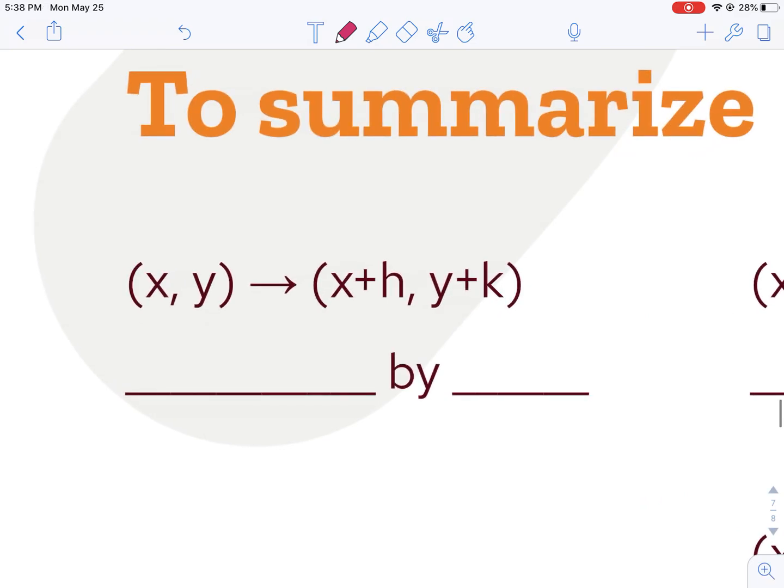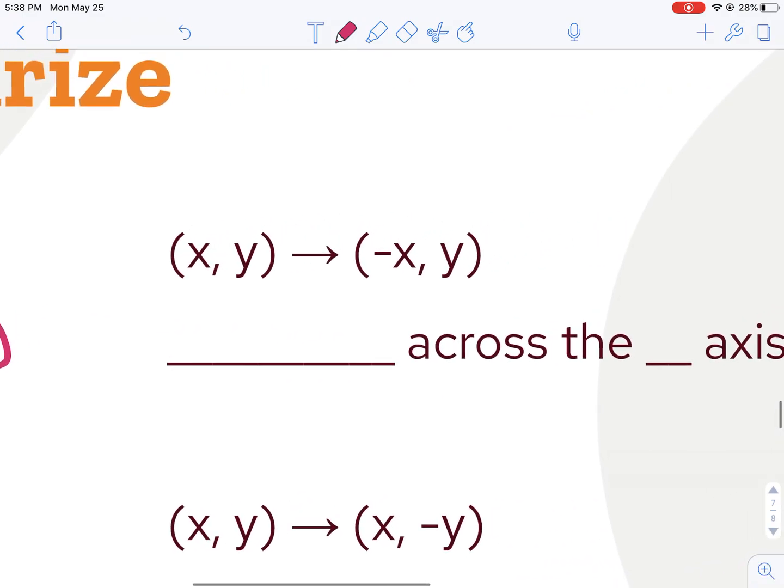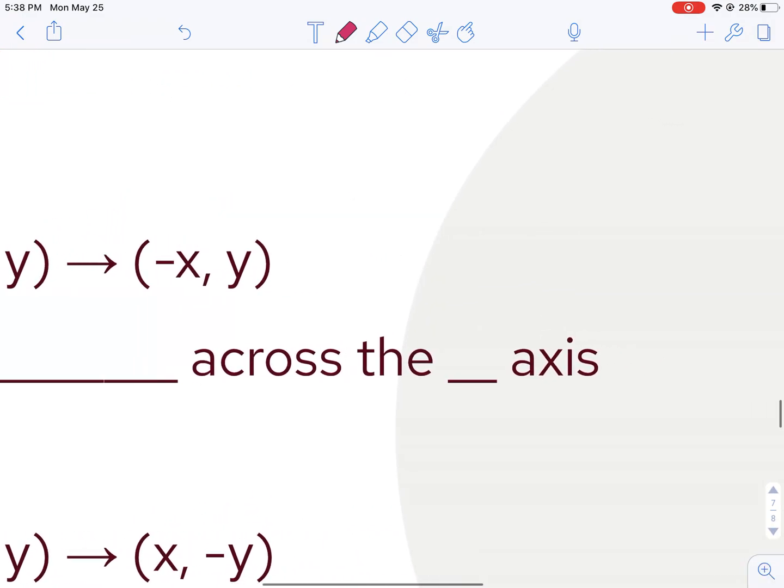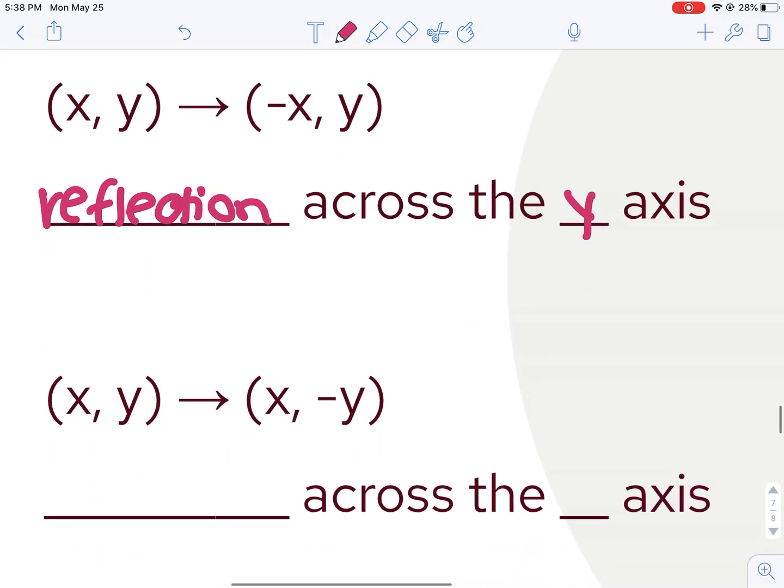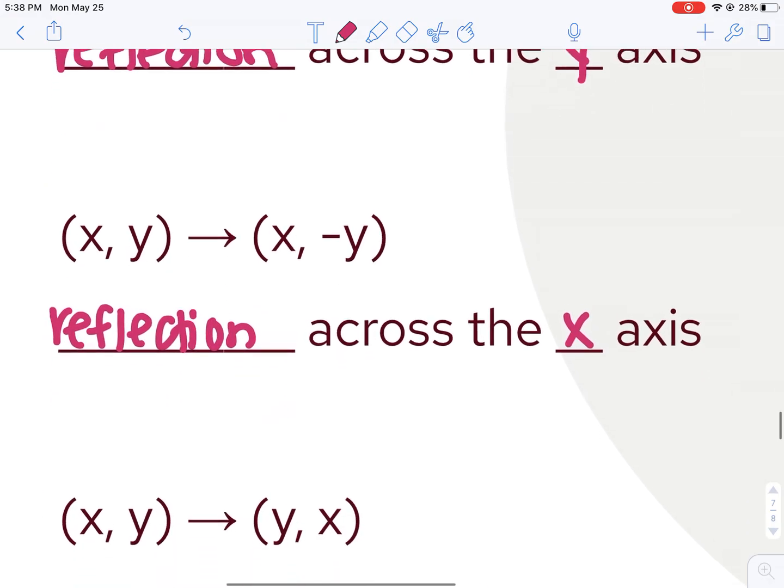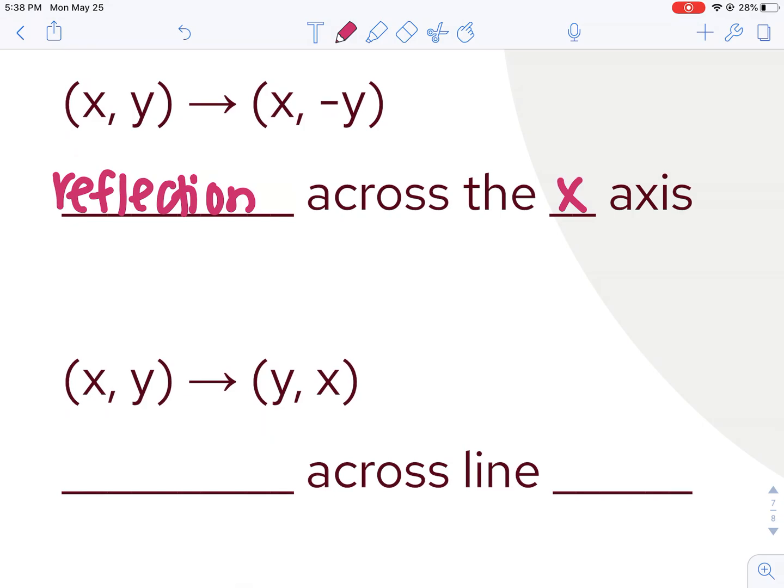Here's a little cheat sheet for you to review. If I have a rule like XY becomes X plus H, Y plus K, I know that that is a translation by the units H, K. So I'm adding H to every X unit, adding K to every Y value. If I make the X negative, that is a reflection across the Y axis, which is counterintuitive. If I make the Y negative, that is a reflection across the X axis. Again, a little counterintuitive. And if I flip my X and Y, that is a reflection across the line Y equals X.